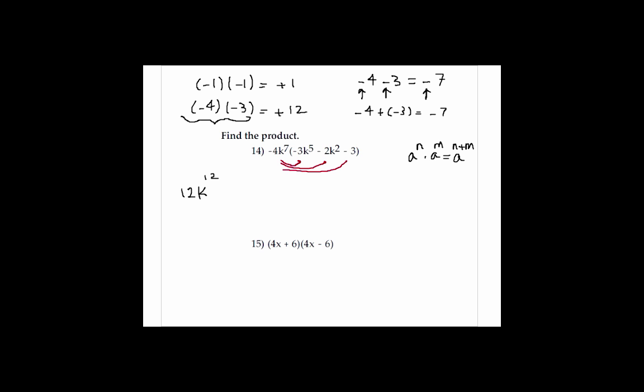All right, let's go and distribute the second one: −4k^7 times −2k^2. That would be what? What is −4 times −2? Plus 8k to the power of—you add the exponents—9. Excellent.